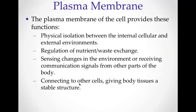And then connecting to other cells, giving body tissues a stable structure. If you remember from yesterday's notes, I talked about how cells are connected to each other with tight junctions, gap junctions, desmosomes. The cell membrane is actually what's going to help those things be achieved, depending on what type of tissue it is. So those are the four main functions of the plasma membrane.